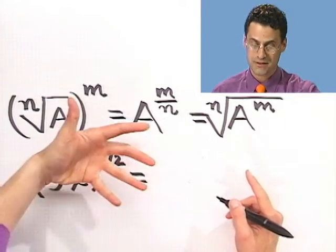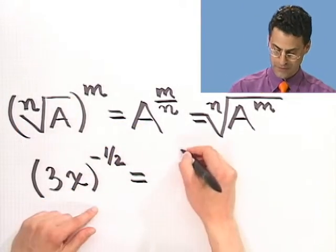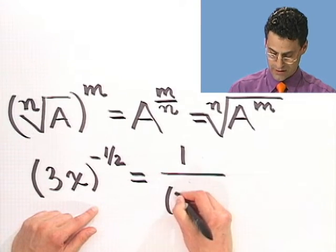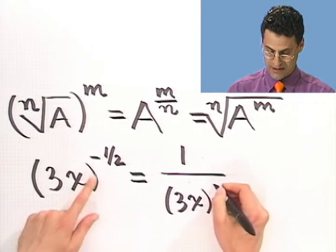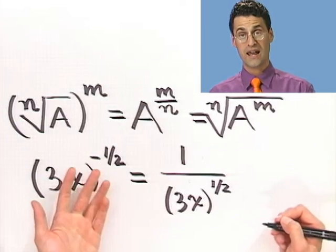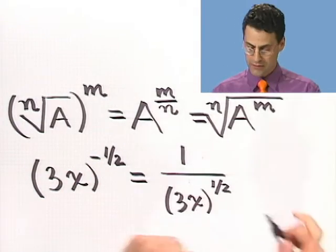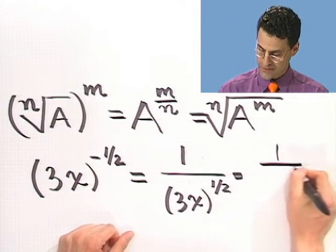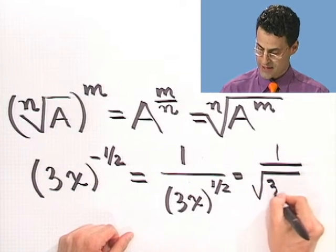Let's deal with the negative sign first. Remember, negative sign flips. So, in fact, this flips this over, and so I have the quantity 3x. Now, I got rid of the negative sign, but I still have the 1 half. What does 1 half do? Square root. So I could write this as 1 over the square root of 3x.